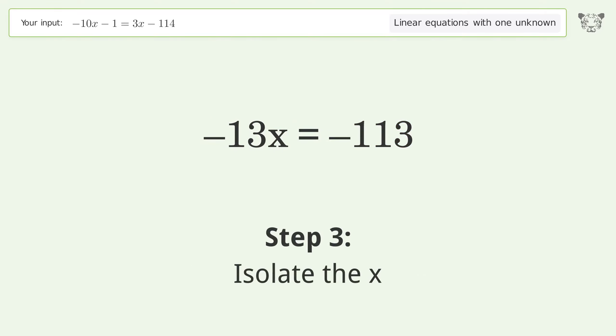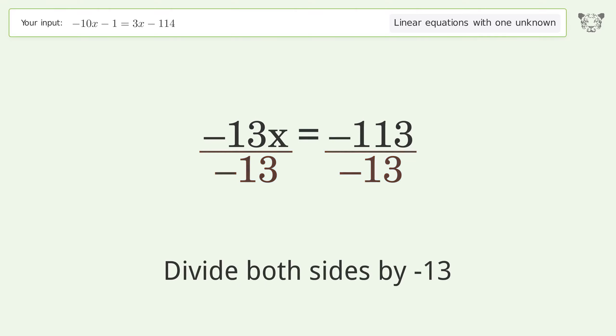Isolate the x. Divide both sides by negative 13. Cancel out the negatives.